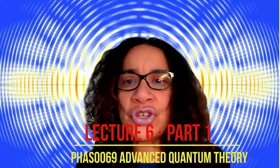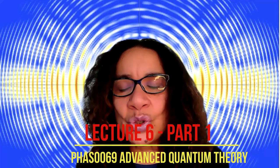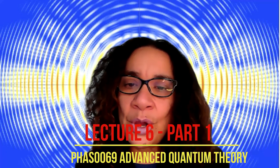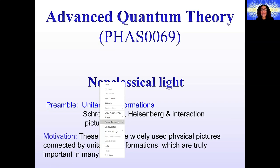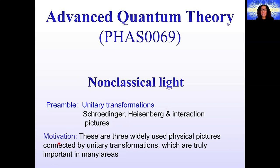Hello everyone. What we're going to do now is, as an application of unitary transformations, we're going to have a look at three physical pictures which you are probably going to use your whole life: the interaction picture, the Schrödinger picture, and the Heisenberg picture. This is still a preamble for our non-classical light, and these pictures are widely used and important in many, many areas.